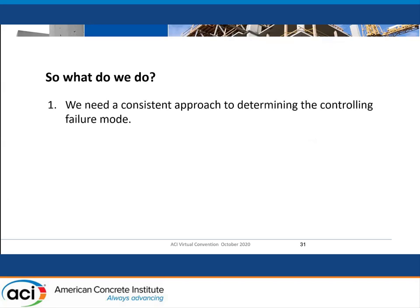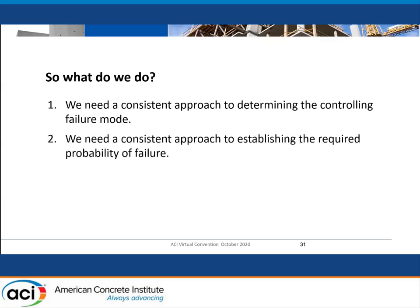So what do we do about this? I think we need a more consistent approach to determining controlling failure modes. We need to talk about all the potential failure modes in a location of the code where the engineer doesn't have to run around from section to section to find them. We really need a consistent approach to establishing the required probability of failure — another way of saying we need to get our act together about these phi factors and about the use of mean strength versus 5% fractile. Both sides probably need to come a little toward the middle to get to a place where we agree. I believe we have all the necessary analytical tools to solve this problem — we just have to put our heads together and have the will to make the necessary corrections.